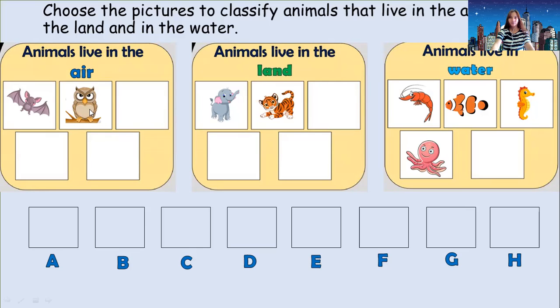Okay, again let's say: what animals live in the air? Bat and owl. How about the animals that live on land? Elephant and tiger. How about animals that live in the water? Shrimp, fish, seahorse, and octopus. Good job, students! That's all for today — Teacher I will see you again tomorrow. Remember, do not forget to wear your mask when you go out, and wash your hands properly. Keep safe, everyone — bye!